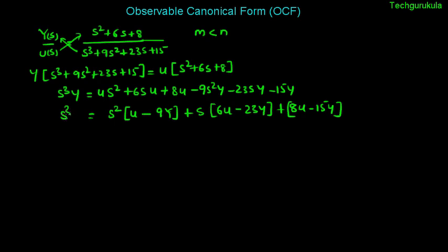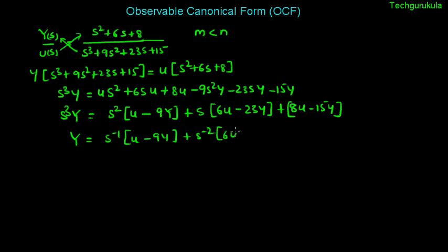This is equal to s-cubed times y. Now dividing the entire expression by s-cubed to solve for y, we get s to the power minus 1 times (u minus 9y), plus s to the power minus 2 times (6u minus 23y), plus s to the power minus 3 times (8u minus 15y).